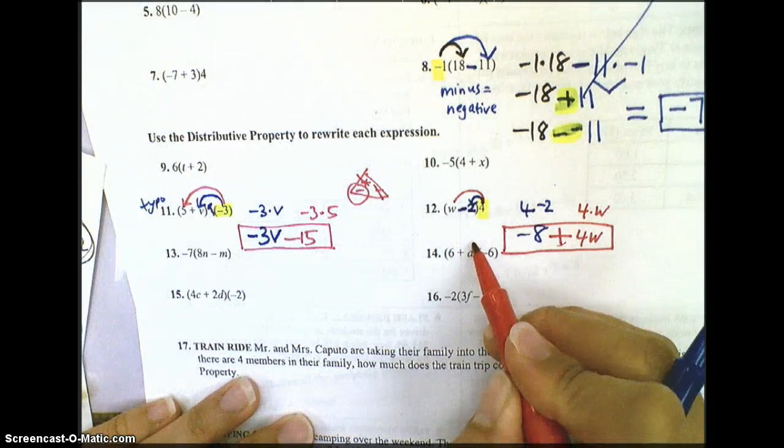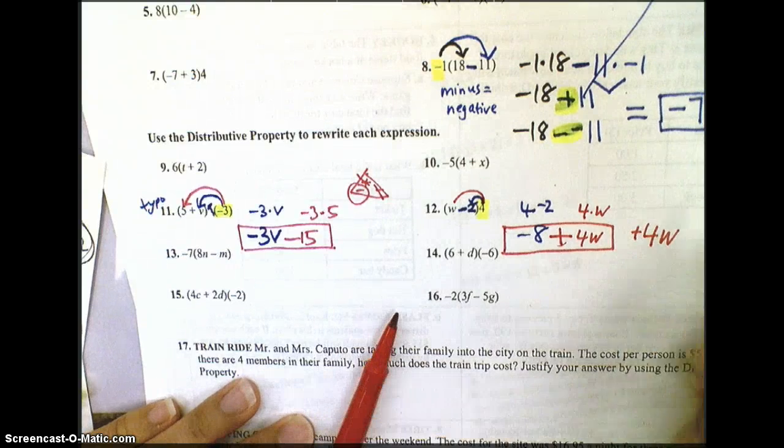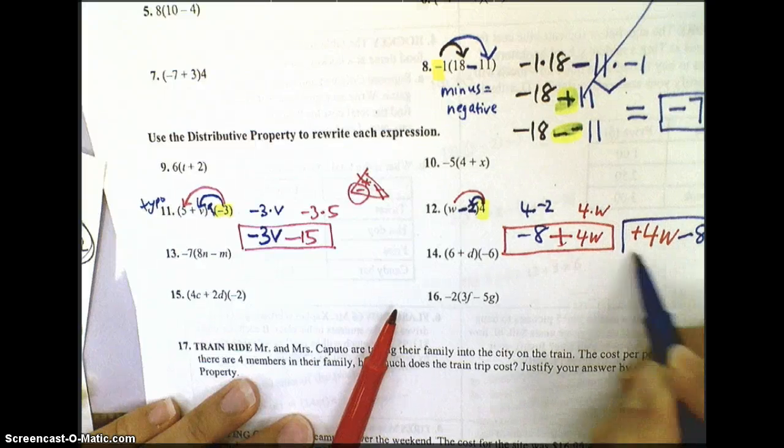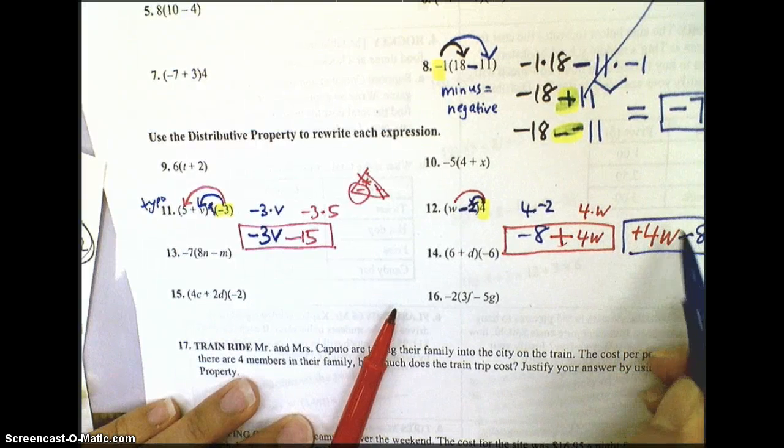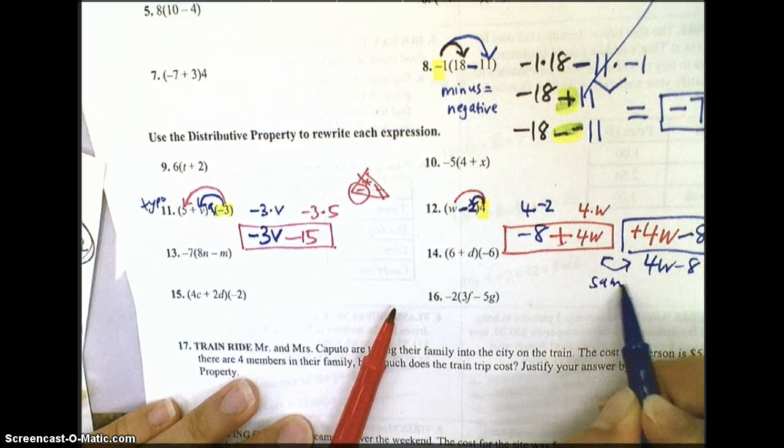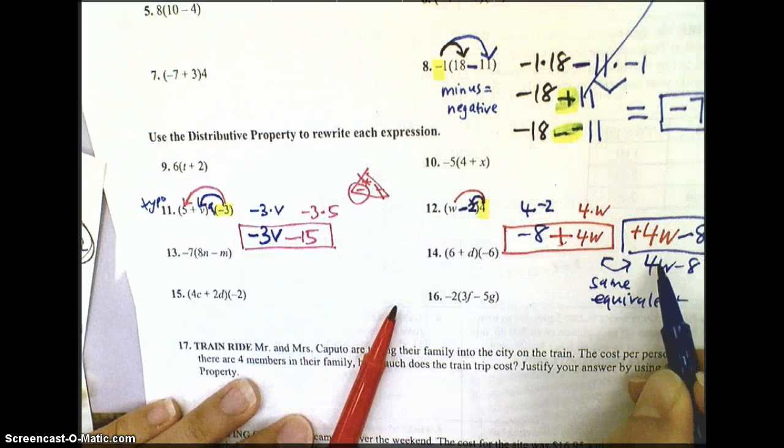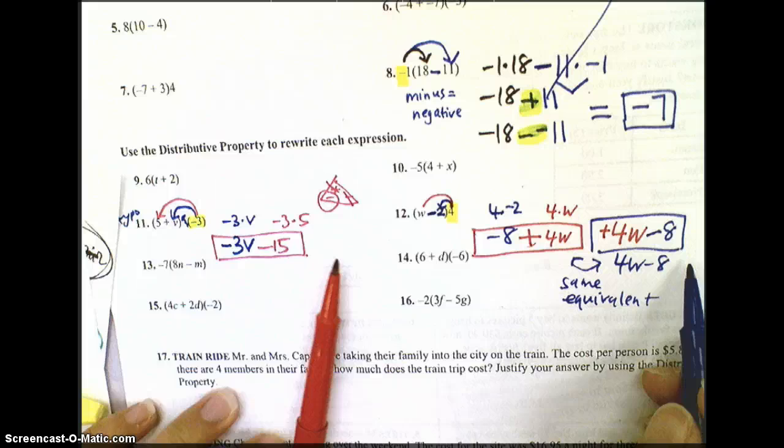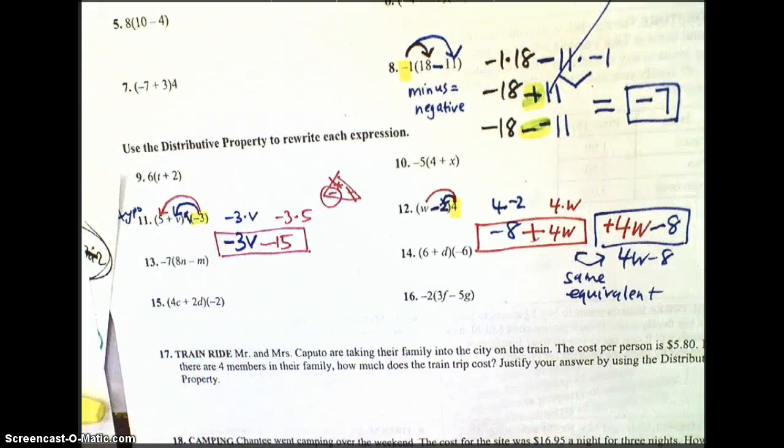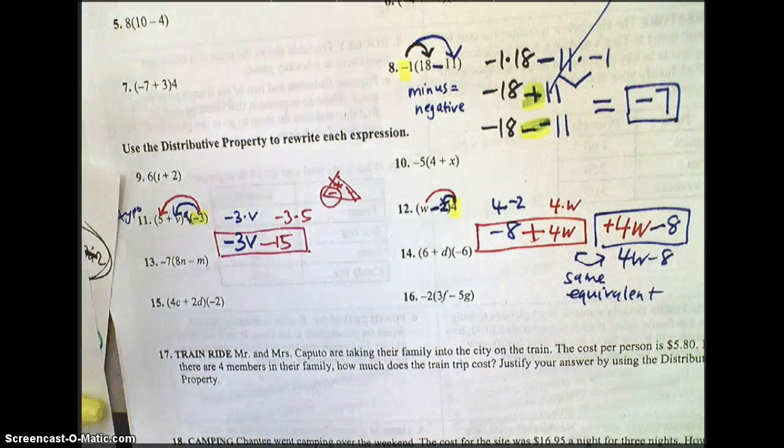Now, if you had chose to write the 4W in the front, then your 4W would still be a positive with the negative 8 behind it, which is really simply just 4W minus 8. And you'll see that these two are the same equivalent answers. So whether you choose to write 4W in the front or behind the negative 8, it doesn't matter. We did 17 and 18 in class together already, so we're going to skip on to the back of the worksheet.